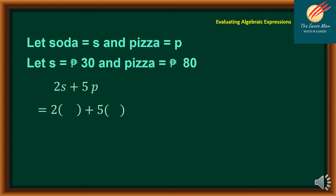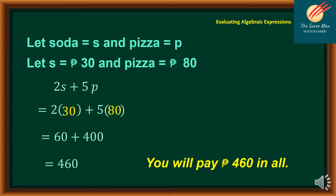To find the total cost, we will use substitution. We will let open and close parentheses represent our variables S and P. Then plug in the given values: S is equal to 30 and P is equal to 80. Performing the operations: 2 times 30 equals 60, while 5 times 80 equals 400. Adding together, we have 460. Therefore, you will pay 460 pesos in all.